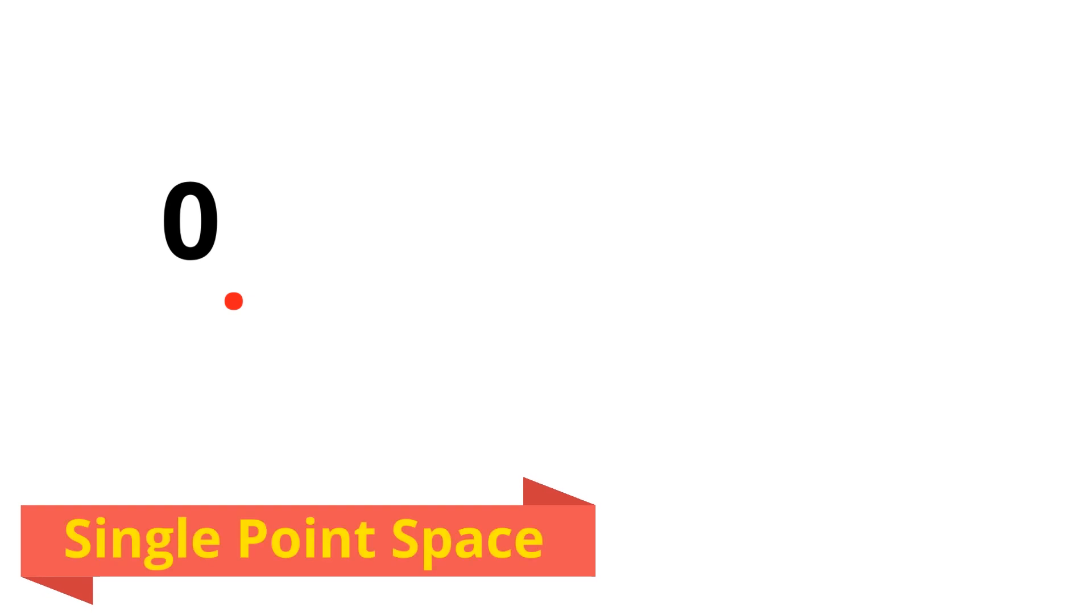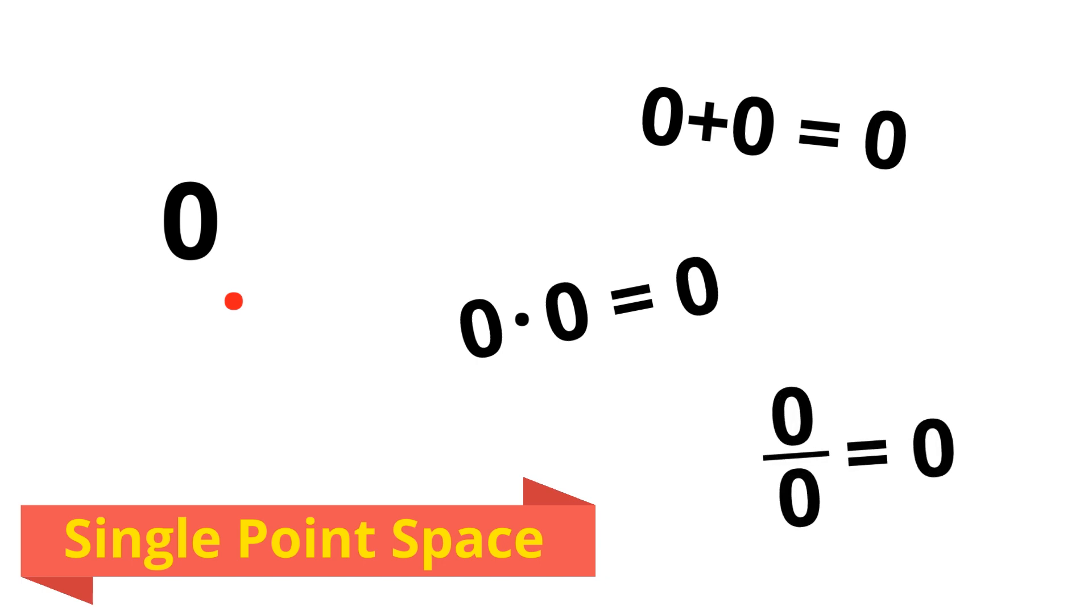For this last number system, imagine a space where we only have a single point, and let's call this point zero. We have all of the usual operations, but since we only have one point to deal with, the answer is always the same. Zero plus zero is zero, zero multiplied by zero is zero, and zero divided by zero is zero.